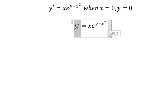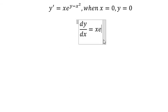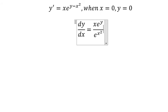About this one, we need to change for dy over dx. This one, we change for e to the power of y over e to the power of x square. Next, we put e to the power of y on the left and dx on the right.